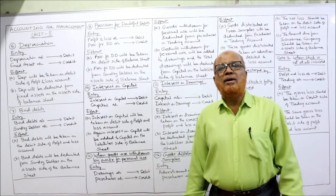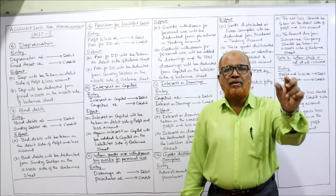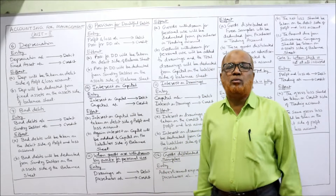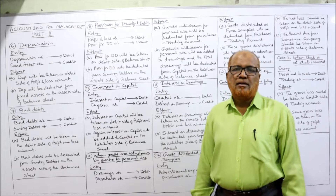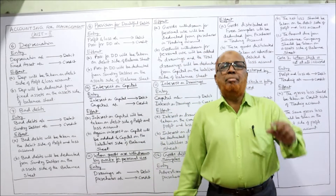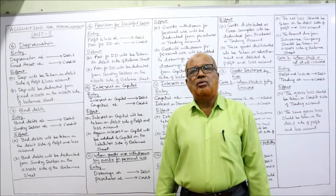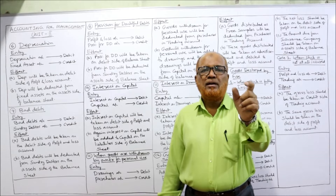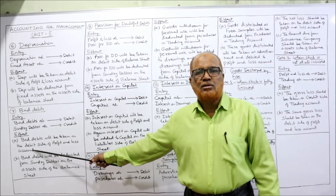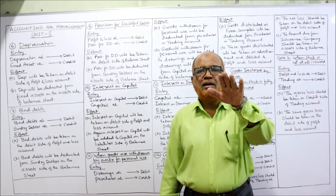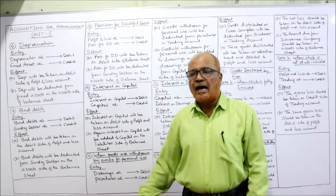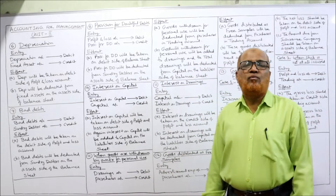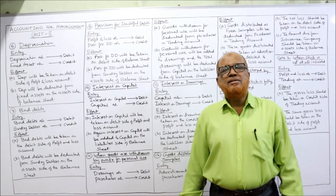The seventh adjustment is regarding bad debts. Bad debts means irrecoverable debts — the amount which cannot be recovered from credit customers. The business has sold goods on credit to many customers, but some customers may not pay; that is a loss to the business called bad debts. The entry is: Bad Debts debit, Sundry Debtors Account credit. The effect: bad debts are taken on the debit side of the Profit and Loss Account, and deducted from sundry debtors on the asset side of the balance sheet.